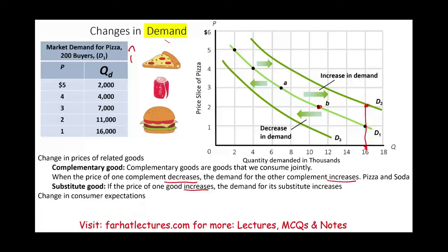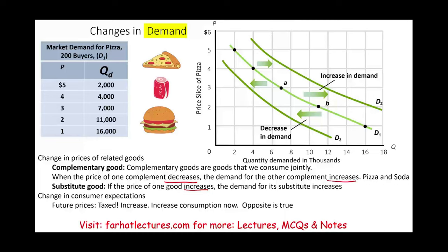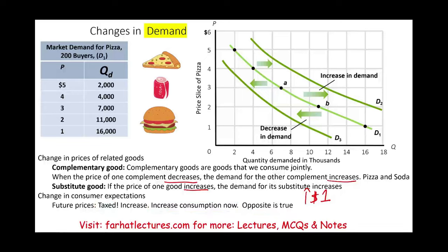Change in consumer expectation is an important concept. What do you think is going to happen in the future — specifically future prices? For example, let's assume the local county is going to place a $1 surcharge on every slice of pizza next quarter. If future prices are going to go up due to taxes, everyone will consume now — you want to consume before it gets expensive. The opposite is true: if a tax is being removed, you'll wait to buy the slice at a cheaper rate.